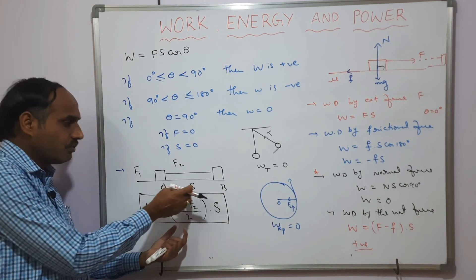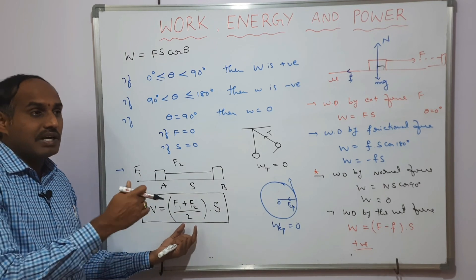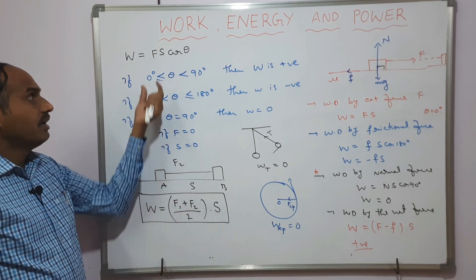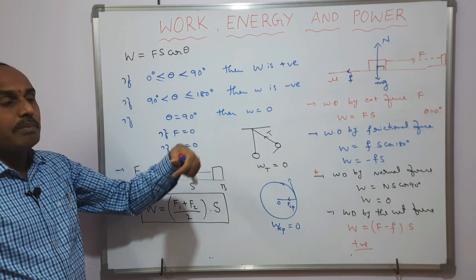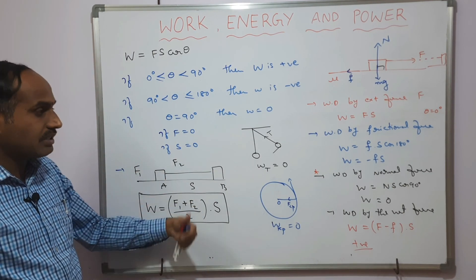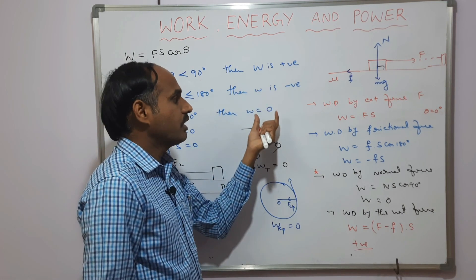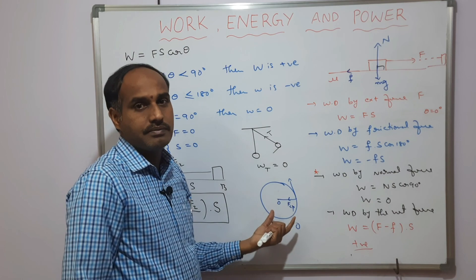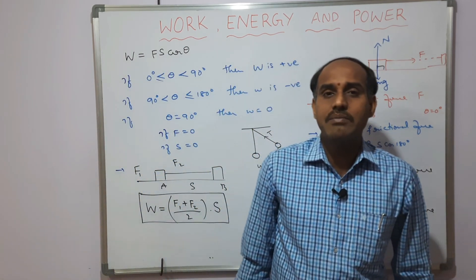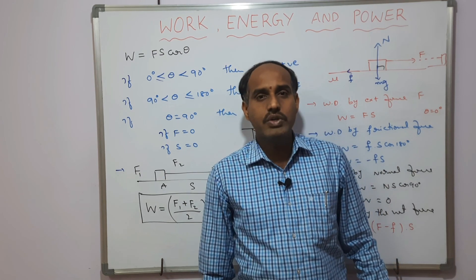The formula W = ((F₁ + F₂) / 2) × s applies to constant force that changes from F₁ to F₂ over displacement s. If force varies continuously, that falls under work done by a variable force, which we will discuss further in upcoming videos. Thank you for watching — if you like the videos, please like, share, comment, and subscribe to get the latest videos.